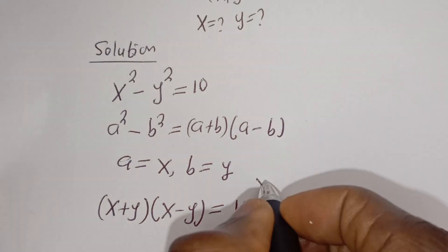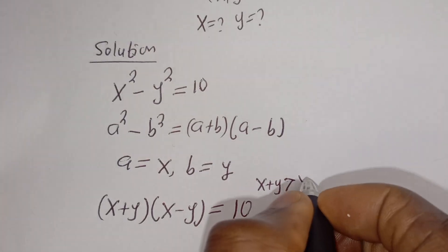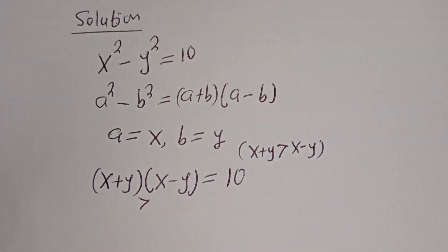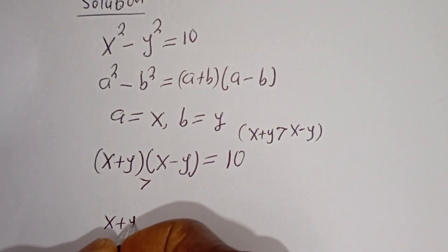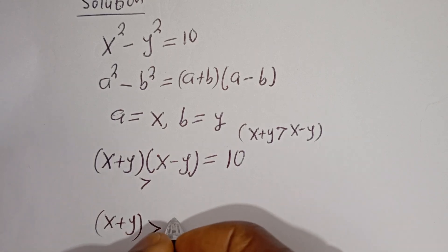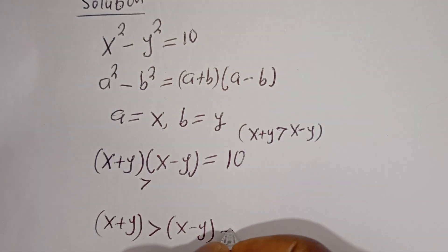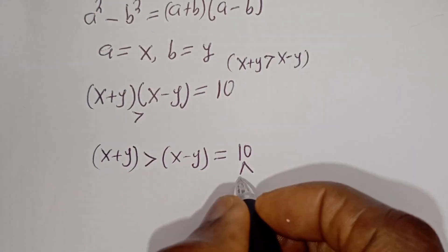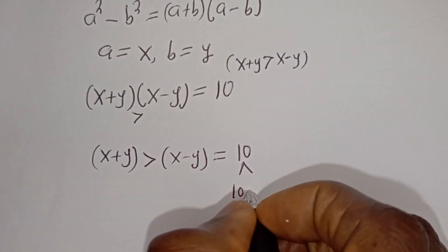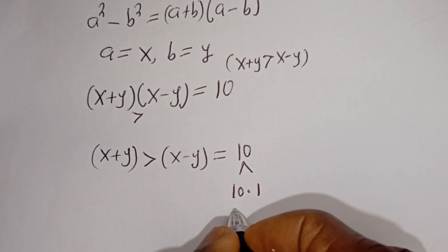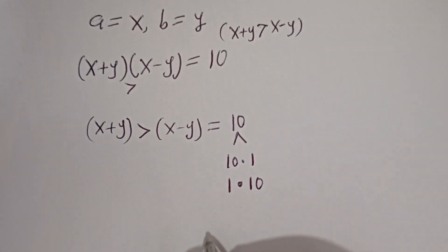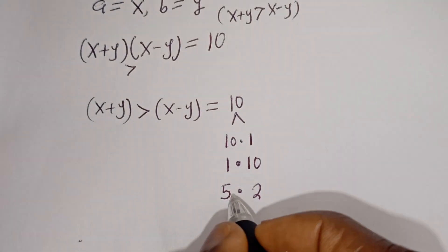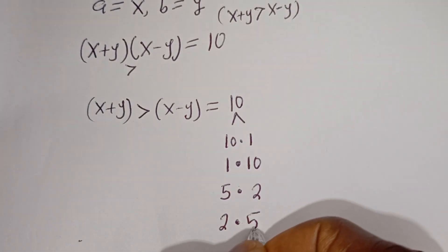From here, X plus Y is greater than X minus Y. So we have (X plus Y)(X minus Y) equal to 10, where X plus Y is greater than X minus Y. Now, 10 is a product of: 10 multiplied by 1, 1 multiplied by 10, 5 multiplied by 2, and 2 multiplied by 5.